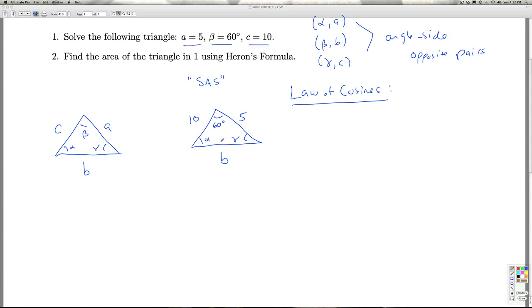Since I have two sides and an included angle, I can go after side B, and once again it's a modification of the Pythagorean Theorem. B squared equals the sum of the squares of the other two sides minus two times the product of those sides times the cosine of the angle between them.